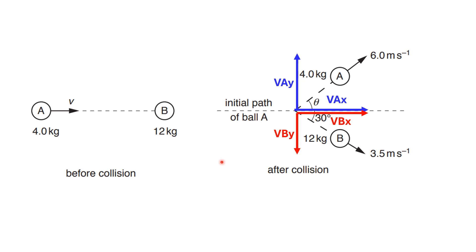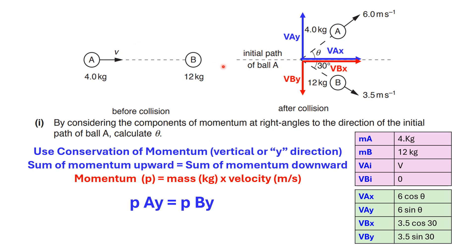Before answering this question, draw the horizontal and vertical components for ball A and B. To calculate the angle theta, we use the conservation of momentum in the vertical direction. The sum of momentum upward is equal to the sum of momentum downward. Using the horizontal direction is not a good idea because we don't know the value of the velocity of ball A before collision.